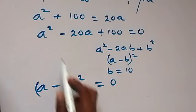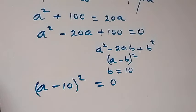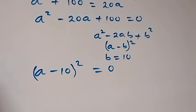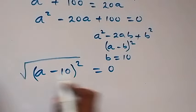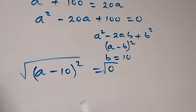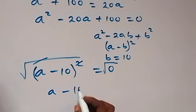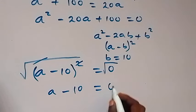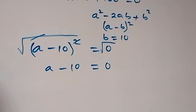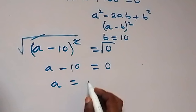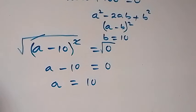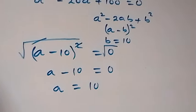From there we take the square root on both sides. The square root of (a minus 10) squared gives a minus 10, and the square root of 0 is 0. So a minus 10 equals 0, which means a equals 10.